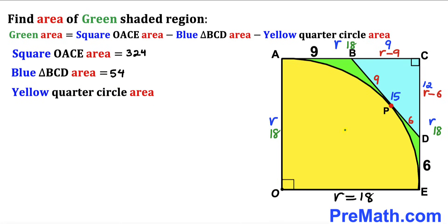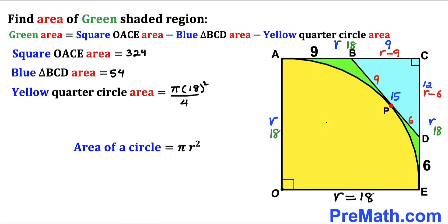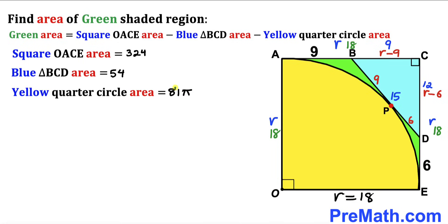Finally, we calculate the area of the yellow quarter circle using area = πr²/4. With radius r = 18, the area is π × 18² / 4 = 324π / 4 = 81π square units.